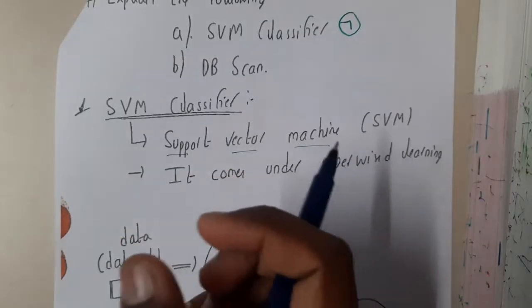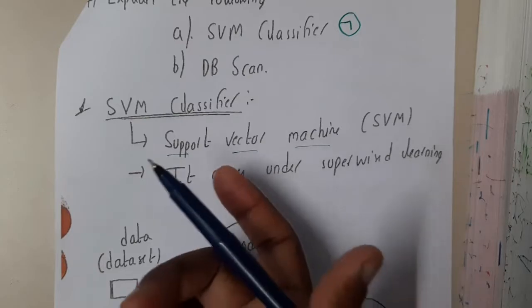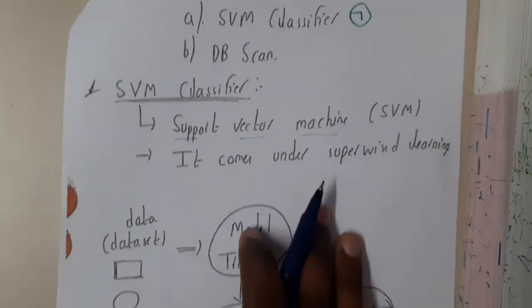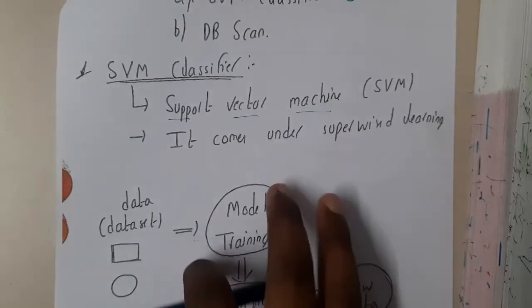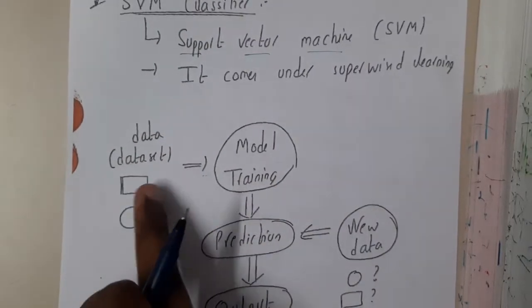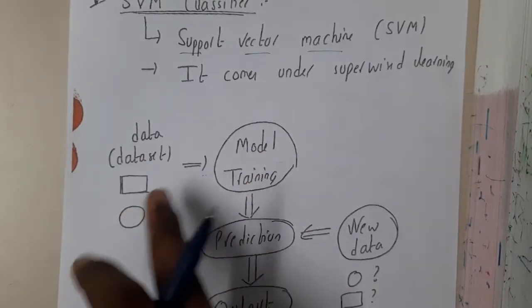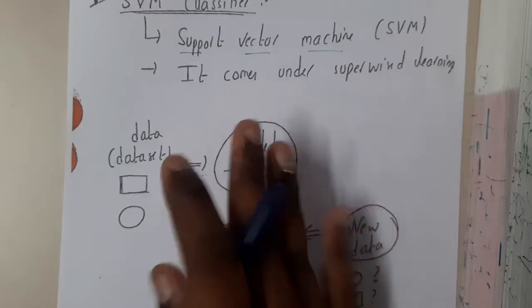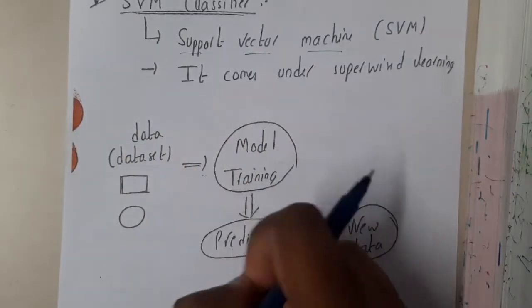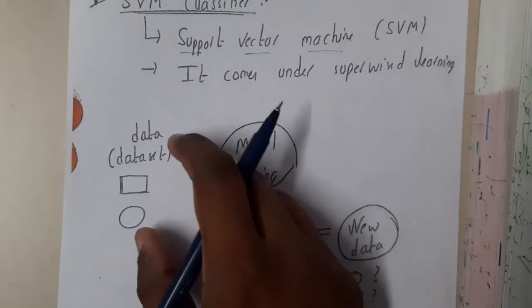Basically, we will be saying that this is the shape, this is the shape, this is the thing, like that we will be defining those things and only then we will be giving. It comes under supervised learning. So initially you will be giving the data set. Here we took an example of two symbols, that is a square and a circle. So whatever items is having four sides, it will be pushing into one side, and whatever are having the circles like no sides, they'll be pushing on to the other side. So initially we will be giving the data set.